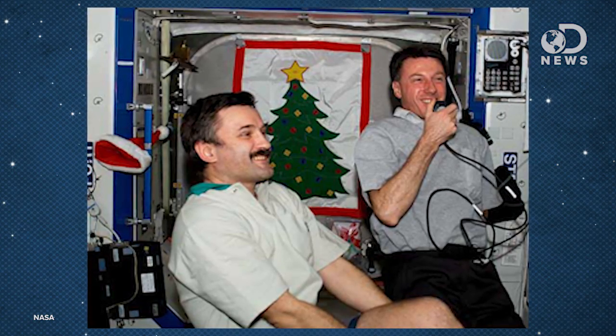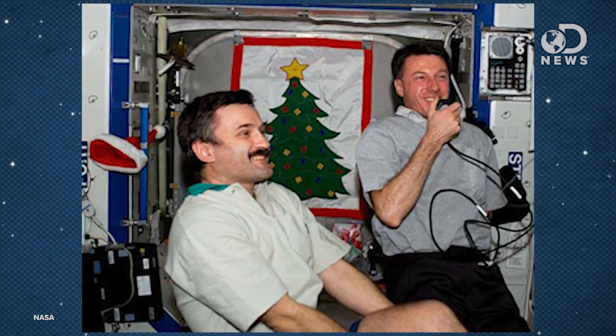For special treats, family members are allowed to send psychological support kits to the astronauts. Past boxes have contained candy canes, videos, games, books, chocolates, things that make them feel more at home when they're 240 miles up in space.